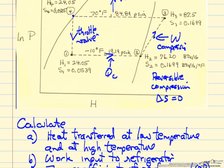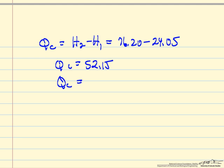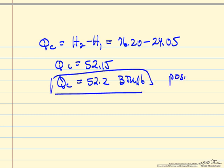Similarly to calculate QC, QC is H2 minus H1, so QC is approximately 52.2 BTUs per pound. This is positive because we are adding heat to the system.